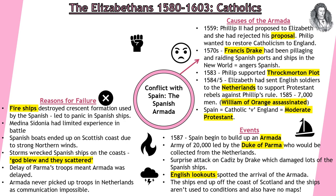The failure of the Armada is partly due to English tactics and good leadership, but also factors the Spanish couldn't control. The English used fire ships — smaller ships to break the crescent formation the Spanish were using — leading to panic and confusion. The Duke of Medina Sidonia had limited experience in battle; whilst a great military leader, he had no naval experience — unlike the English, who were led by Howard, Drake and Hawkins, all much more experienced naval officers. Spanish boats ended up on the Scottish coast due to strong northern winds, with storms wrecking ships. Elizabeth would later say 'God blew and they were scattered.' There was also a delay in Parma's troops, and the Armada never picked up troops from the Netherlands as communication was impossible.